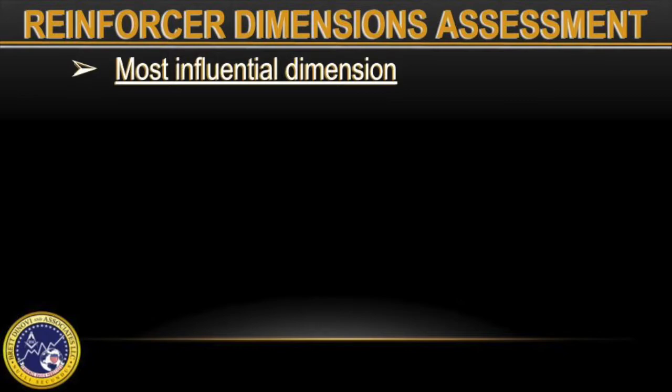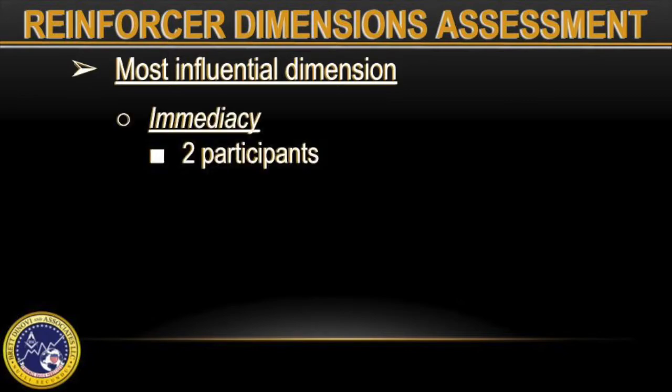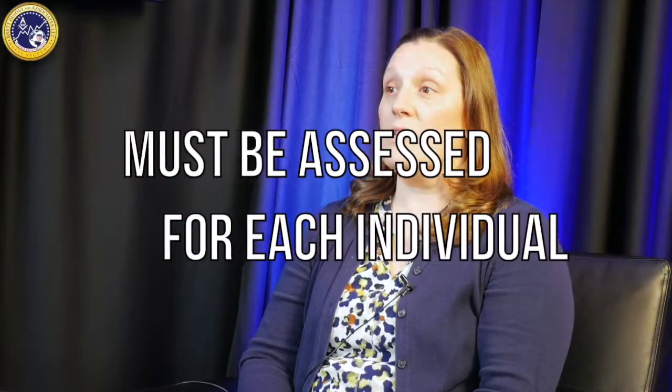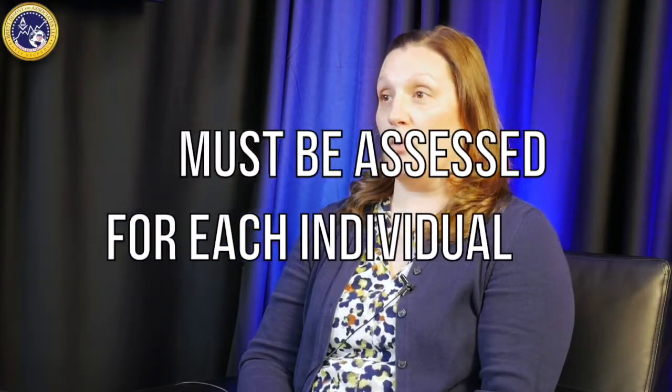Results indicated that the most influential dimension for two participants was immediacy of reinforcement, for three participants it was the quality of reinforcement, and for one participant it was the rate of reinforcement. Collectively, the results of this and other studies indicate that the sensitivity to reinforcer dimensions is idiosyncratic, and thus must be assessed for each individual.